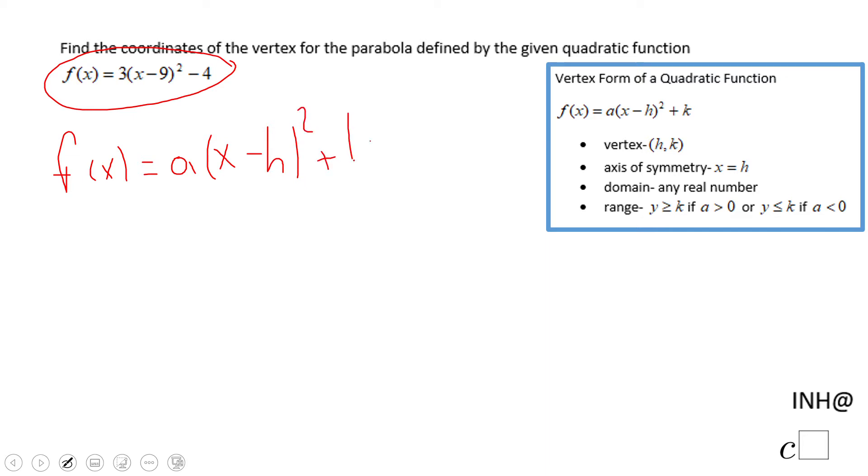So if we look now we can match the terms right. We look at this h, x minus 9, x minus h, so h is 9. And this k is, be careful here, negative 4.